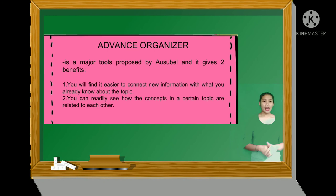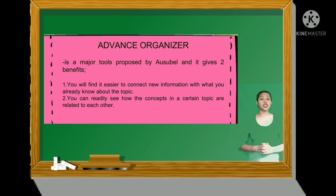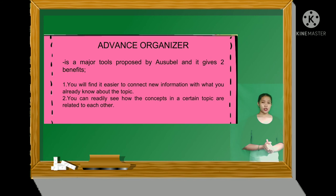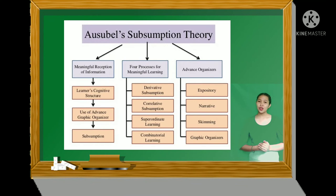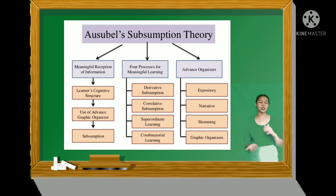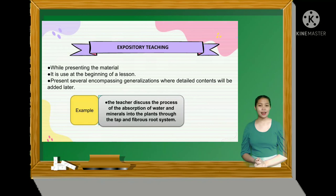Let's proceed to the advanced organizer. The advanced organizer is a major tool proposed by Ausubel and it gives two benefits. First, you will find it easier to connect new information with what you already know about the topic. And second, you can readily see how the concepts in a certain topic are related to each other. An example of an advanced organizer is the Ausubel Subsumption Theory itself — by looking at the advanced organizer, we can figure out the content of his theory and get an overview of it.